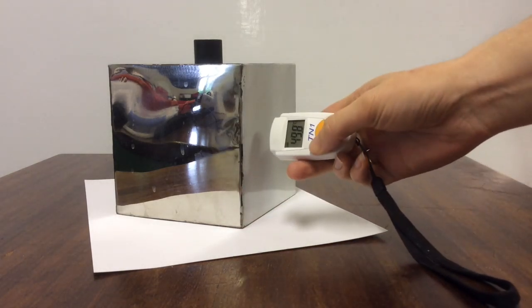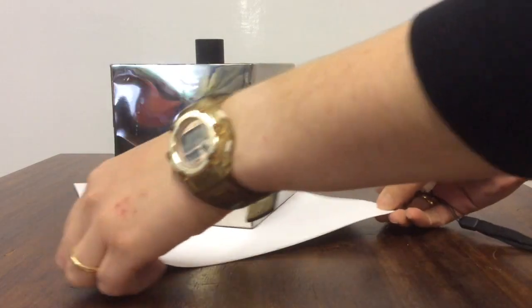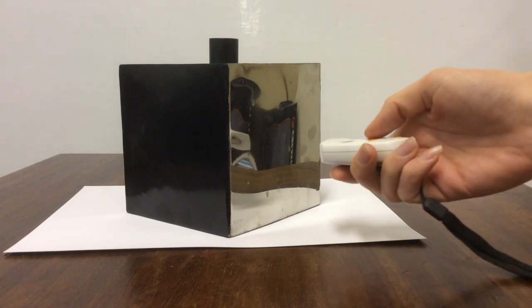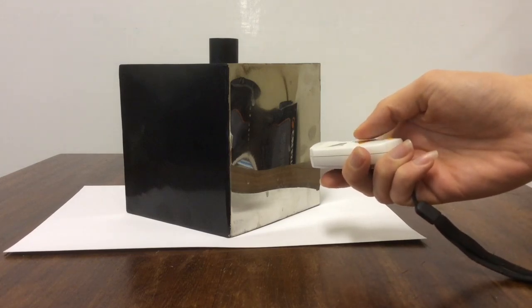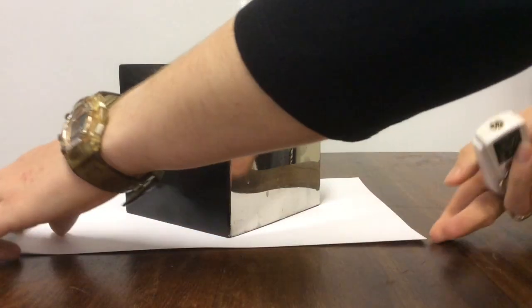Let's test the white surface. That's 49.8 degrees C. Twist the cube around so that I can test the silver surface. It's 27.3 degrees C. That's quite a lot cooler.